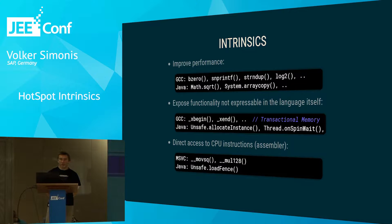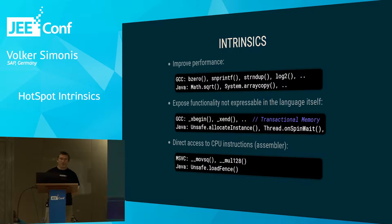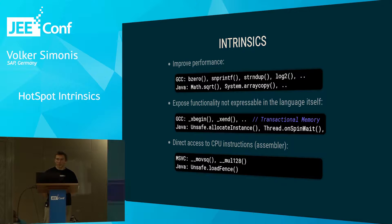Also in Java 9, there will be a new method on Thread called onSpinWait, which on Intel CPUs translates to the pause instruction, so you can do more effective spin loops. It's JEP 285.